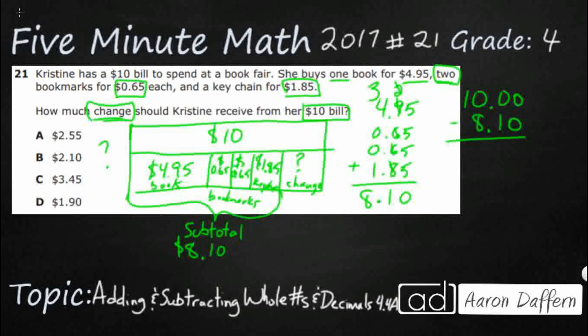So we're going to need to regroup. The ones place is fine, but we really can't do anything with the hundredths place and the tenths place. So we're going to have to come over here, take away this $10 bill, break it up into 10 ones, take a 1 and leave 9, then break that up into 10 dimes. So with our 10 dimes here: 10 minus 1 is going to be 9, and 9 minus 1 is going to be 8. So our answer here is going to be $1.90. That's how much change she has left. The answer is D.